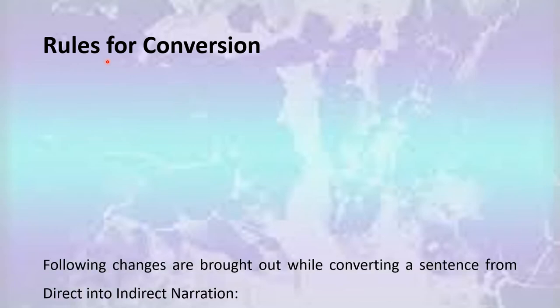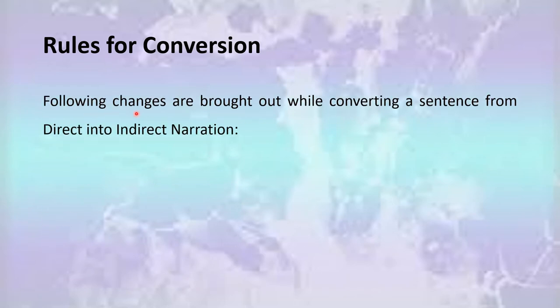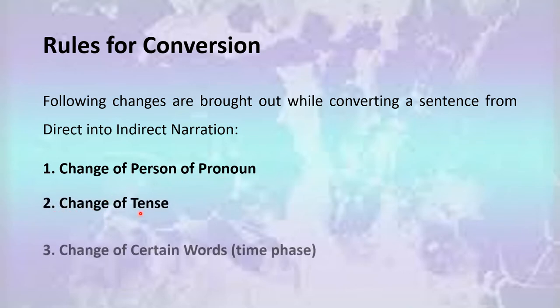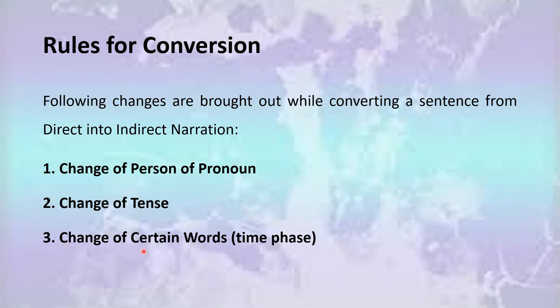Let's move on and talk about some basic rules for converting the given direct speech into indirect speech. We follow certain changes: Number 1, we change the person of pronoun. Number 2, we change tense. And Number 3, we change certain words or time phrases. We shall be talking about these three rules for converting a sentence from direct speech into indirect speech.